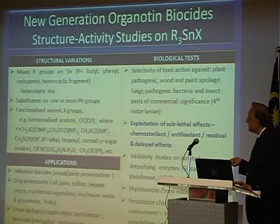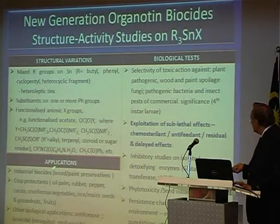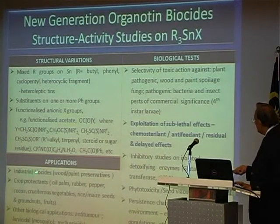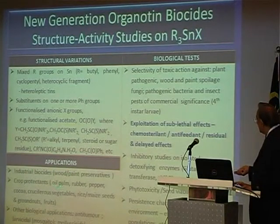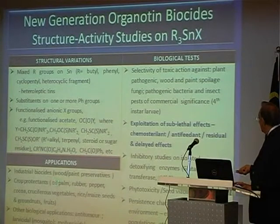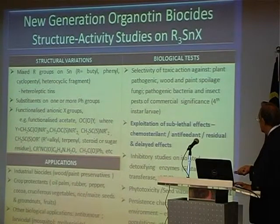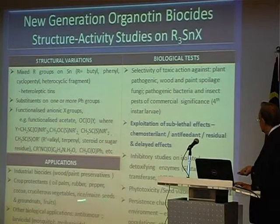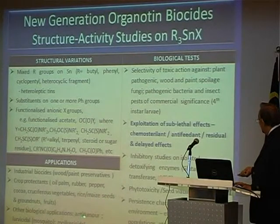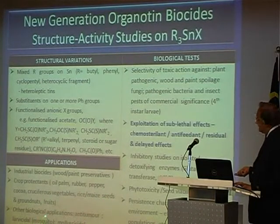What is the reason for doing this? We were looking for industrial biocide applications, crop protectants — oil palm, rubber, pepper, cocoa, cruciferous vegetables — all these we looked at. Anti-tumor properties, we were looking at this as well.